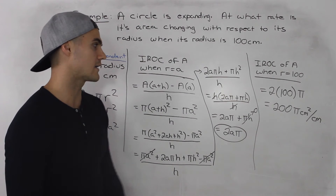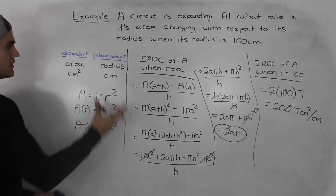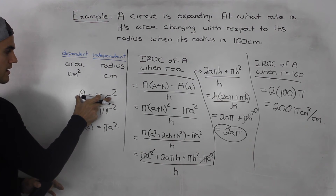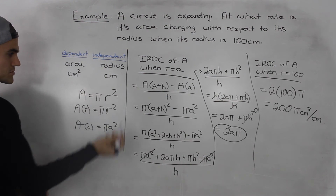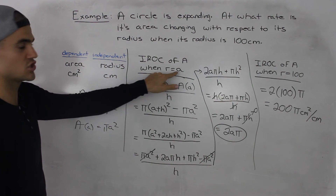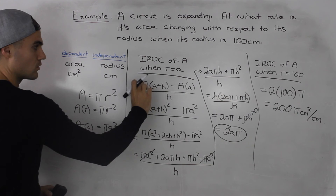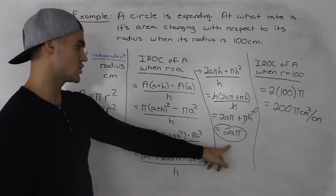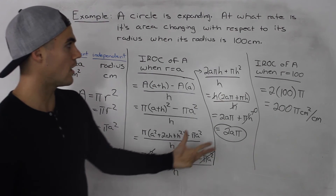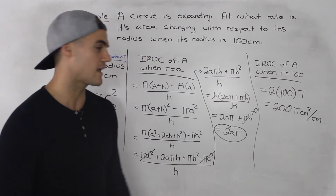That's your final answer. As a recap: first, we identified the dependent and independent variables. Then we related them with the area equation of a circle, A = πr². Then we used the difference quotient to find the general instantaneous rate of change when the radius equals a general value a. Finally, since we wanted the rate when the radius is 100, we plugged in 100 for a.